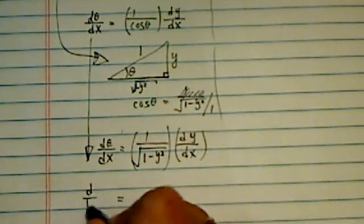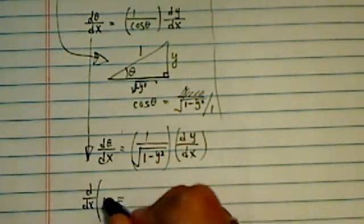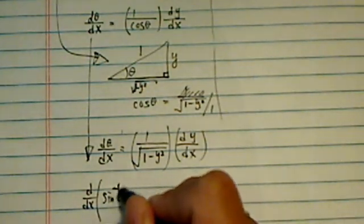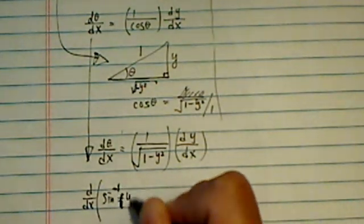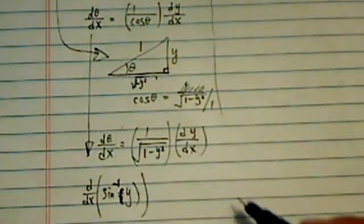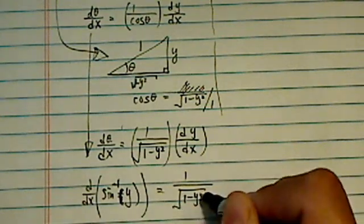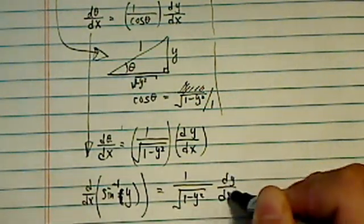So, d dx, well, what's theta? Theta is really sine inverse or arc sine of y, okay, equal to 1 over y minus y squared dy dx.